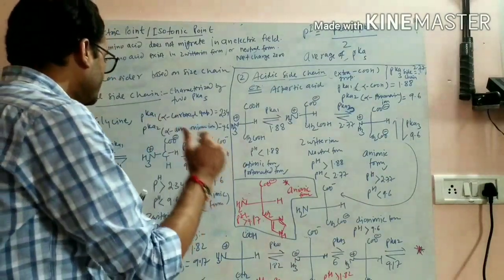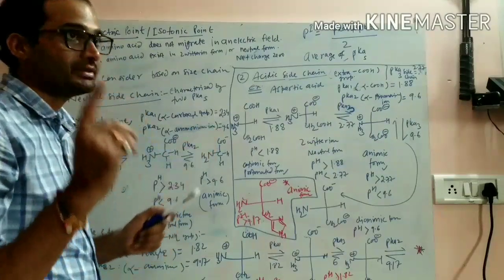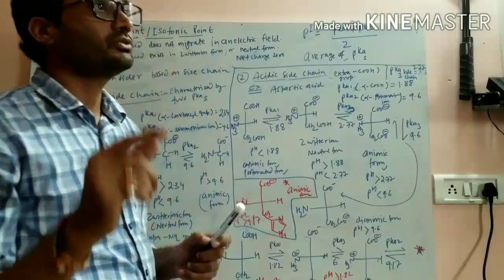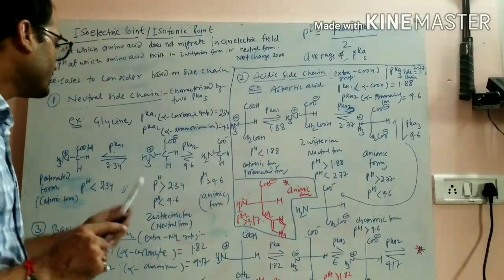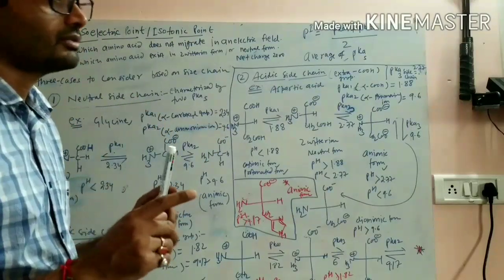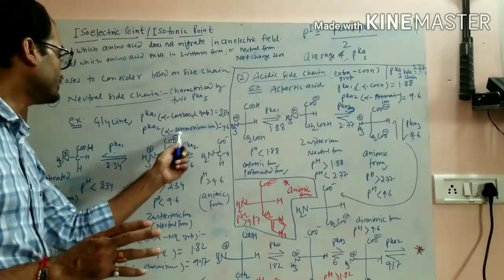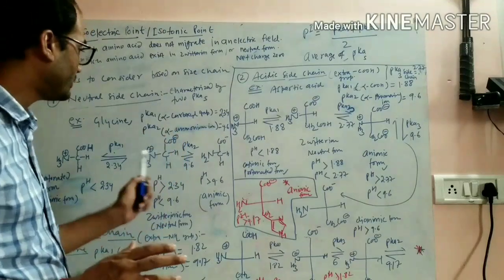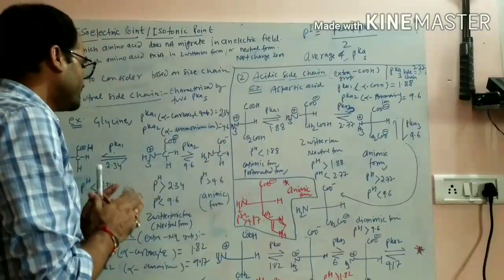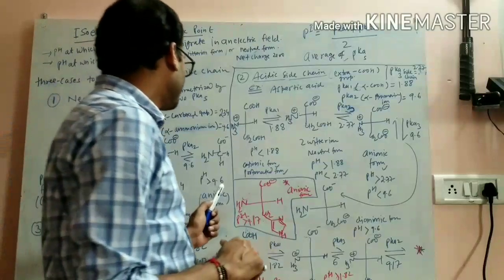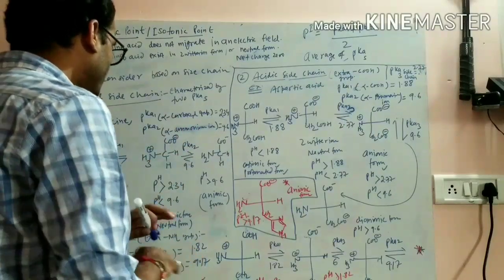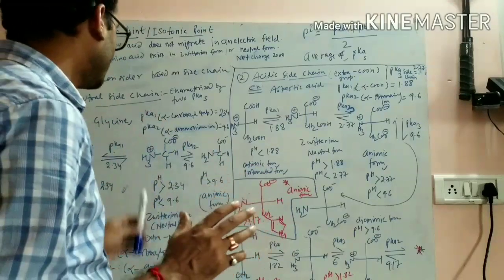When the pH of the solution is less than pK1 = 2.34, all functional groups get protonated: the COOH group is intact and the NH2 group is protonated to NH3+. The overall charge is +1, so this is the cationic form. When the pH is greater than 2.34, the alpha-carboxyl group gets ionized to COO−, while the NH3+ group remains protonated. This gives one positive and one negative charge — total electrical neutrality — and this is the zwitterionic form.